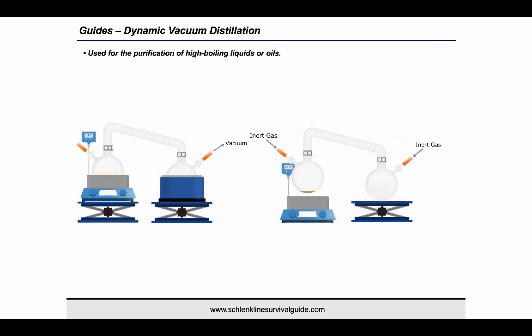For high boiling liquids and oils, it is more common to perform a dynamic vacuum distillation for purification. A distillation bridge connected to a receiving flask is first cycled onto the Schlenk line and then connected to the flask containing the crude material under a flow of inert gas. The stopcock on the heating flask is closed and a vacuum is then slowly applied from the receiving flask stopcock. The liquid is then heated to the desired temperature and the receiving flask is placed in an ice or liquid nitrogen bath to condense the purified liquid. After the distillation, the system is warmed or cooled back to room temperature then backfilled with inert gas for further manipulations.